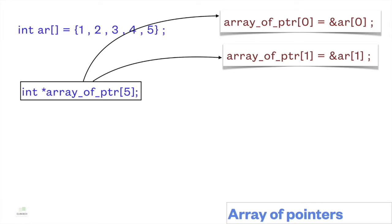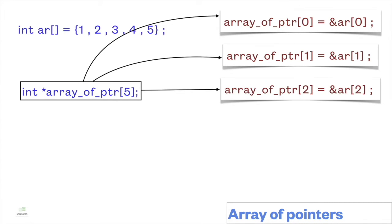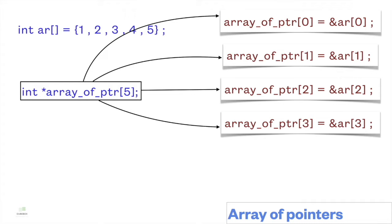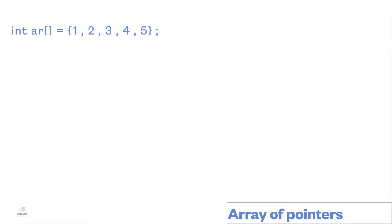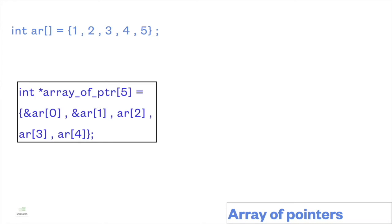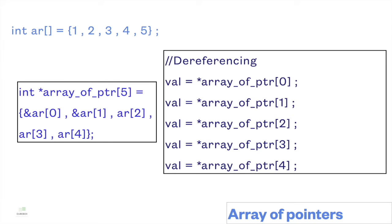Address of 1st element to 1st element of the array of pointers, address of 2nd element to 2nd element, address of 3rd element to 3rd element, and address of 4th element to 4th element of the array of pointers. Declaration and assignment can be done together. Using the star operator, we can do the dereferencing.